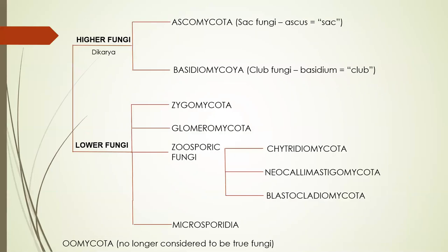I've put up a schematic for eight different phyla of fungi based on the most recent textbooks and papers. To show where entomopathogenic fungi sit: we have the higher fungi with septate hyphae — the Dikarya — including the Ascomycota, or sac fungi, with their ascus meaning 'sac,' and the Basidiomycota, or club fungi, basidium being Latin for 'club.'